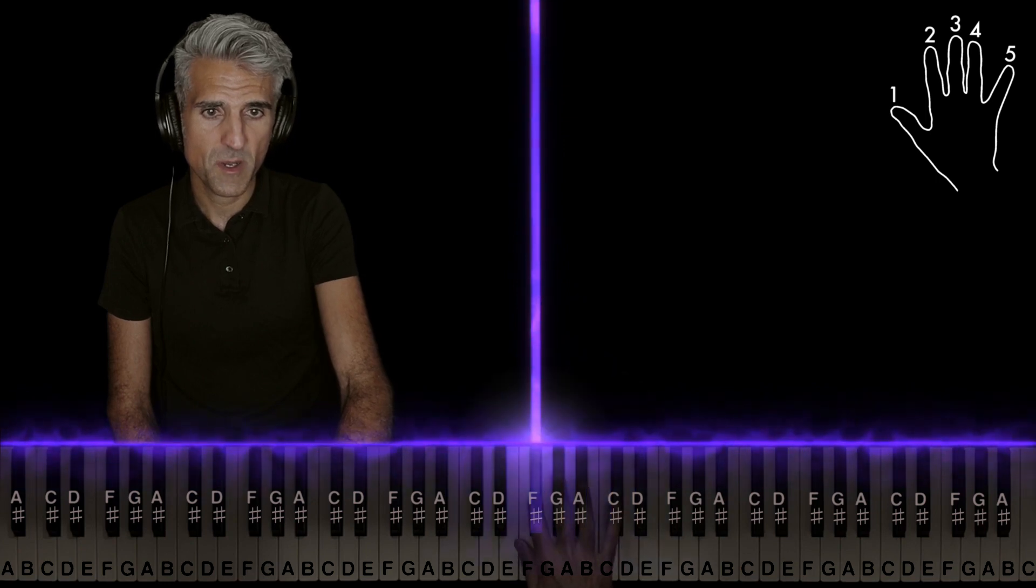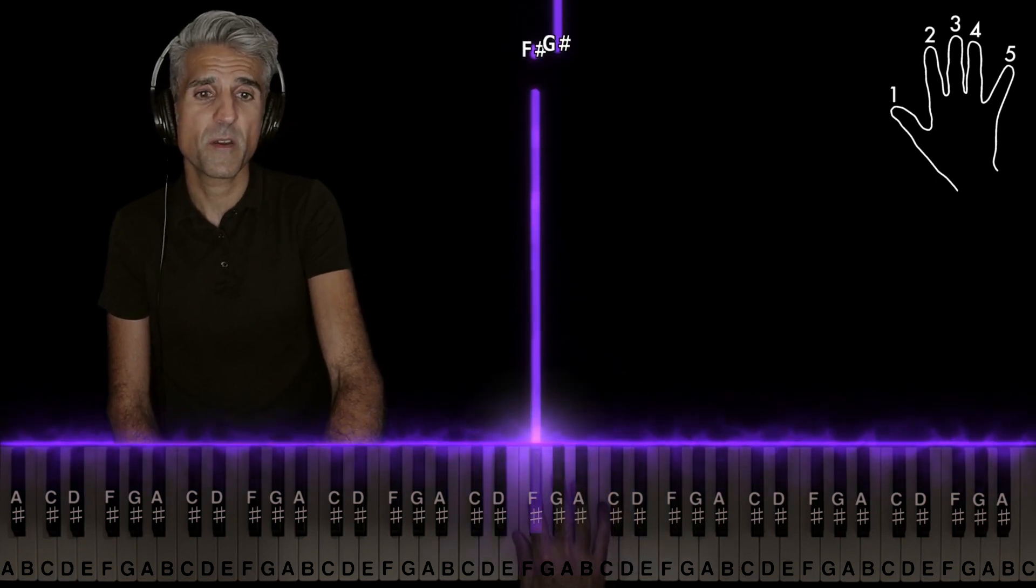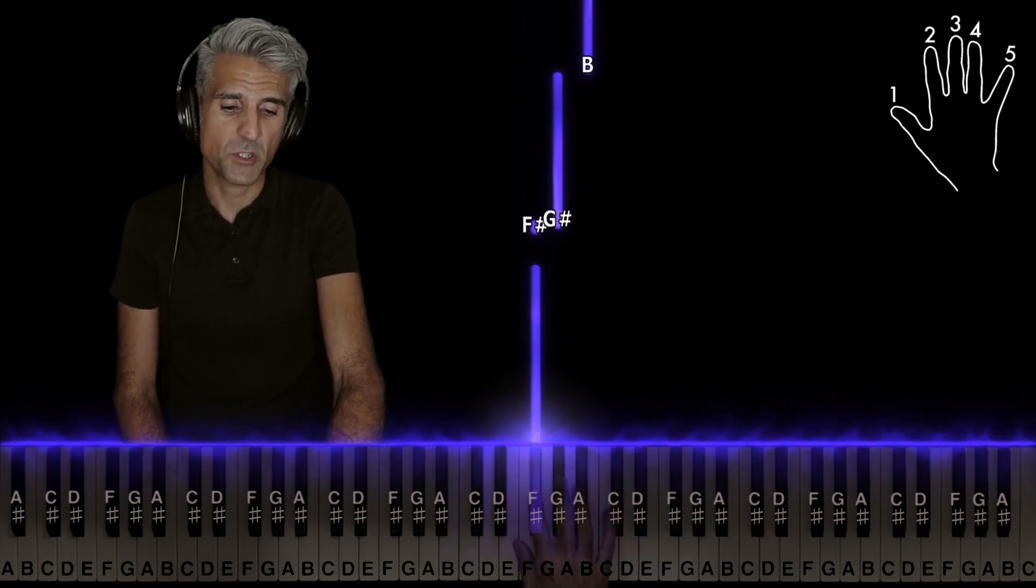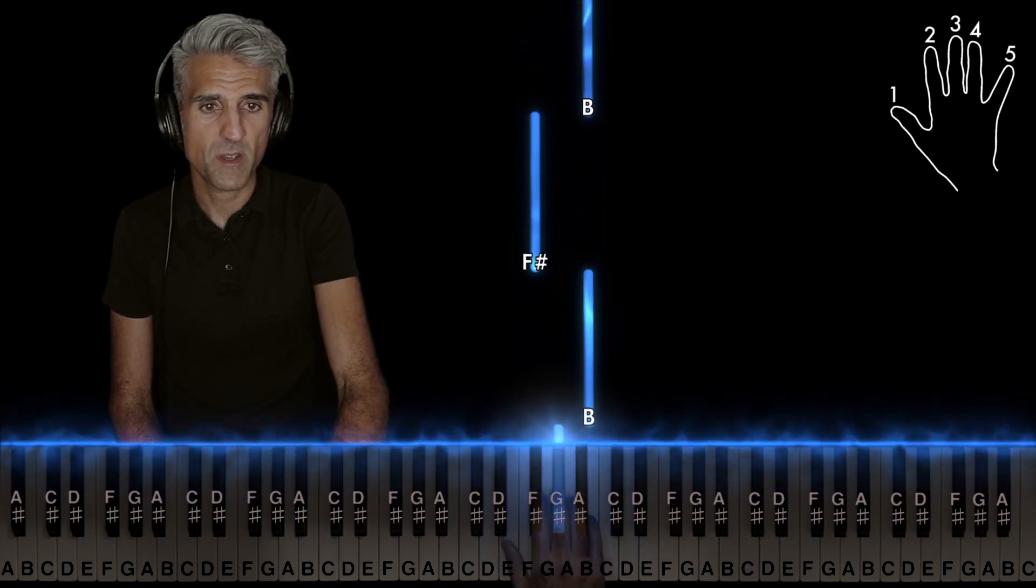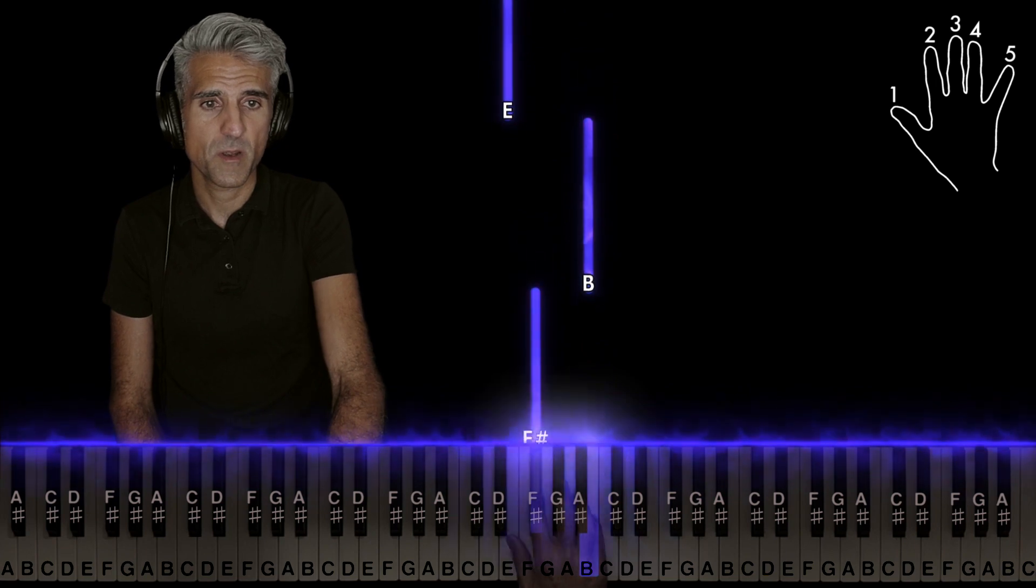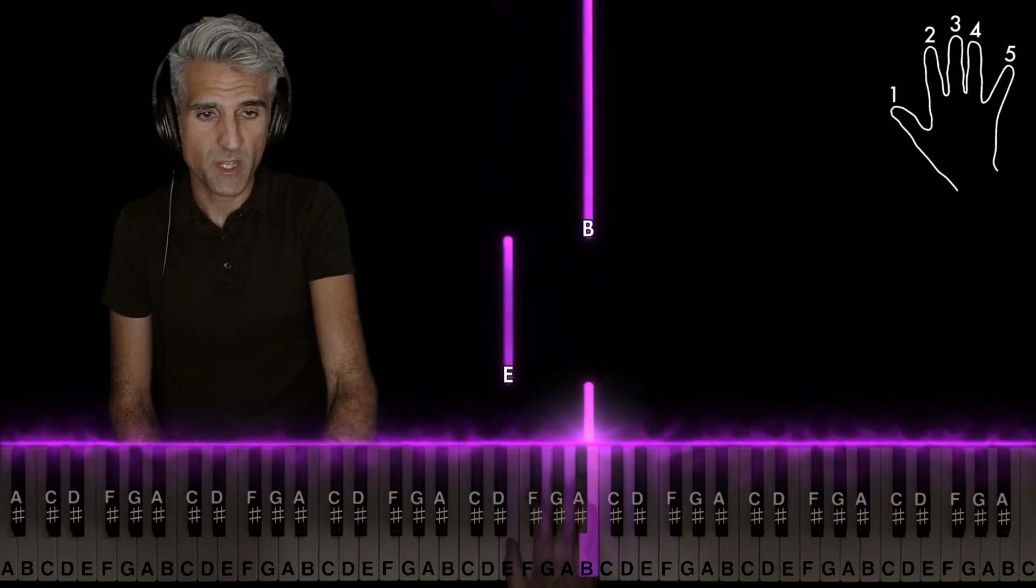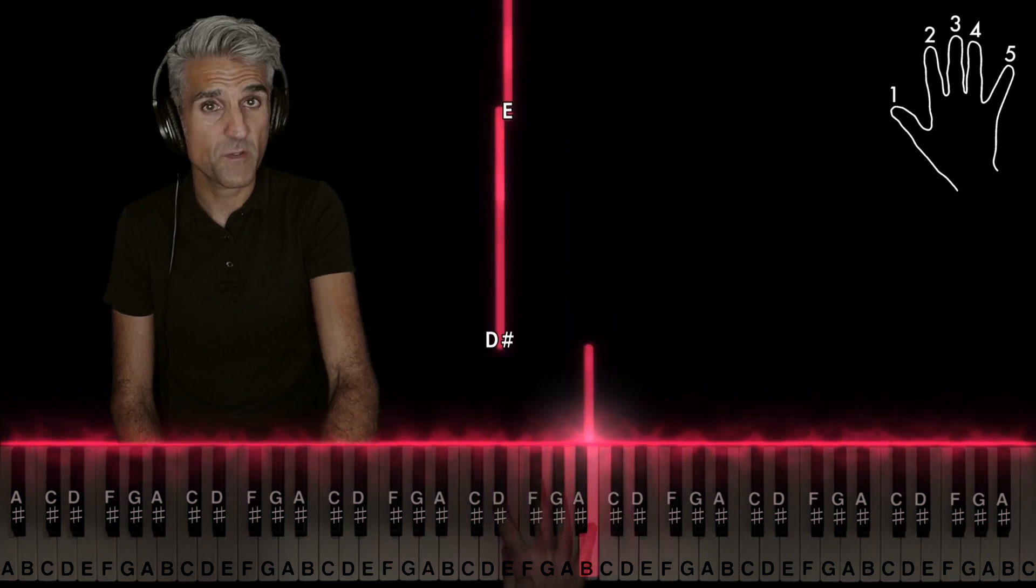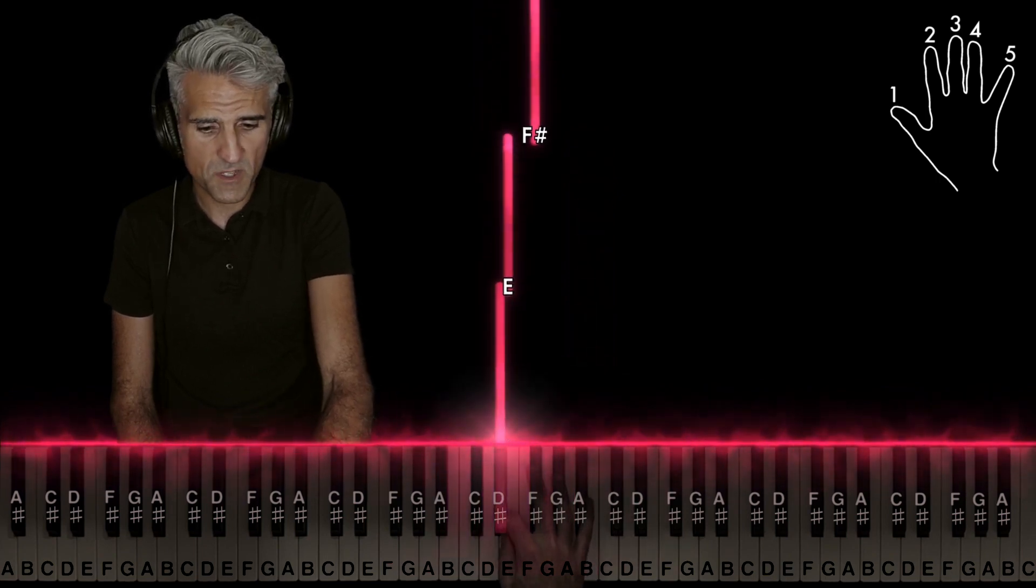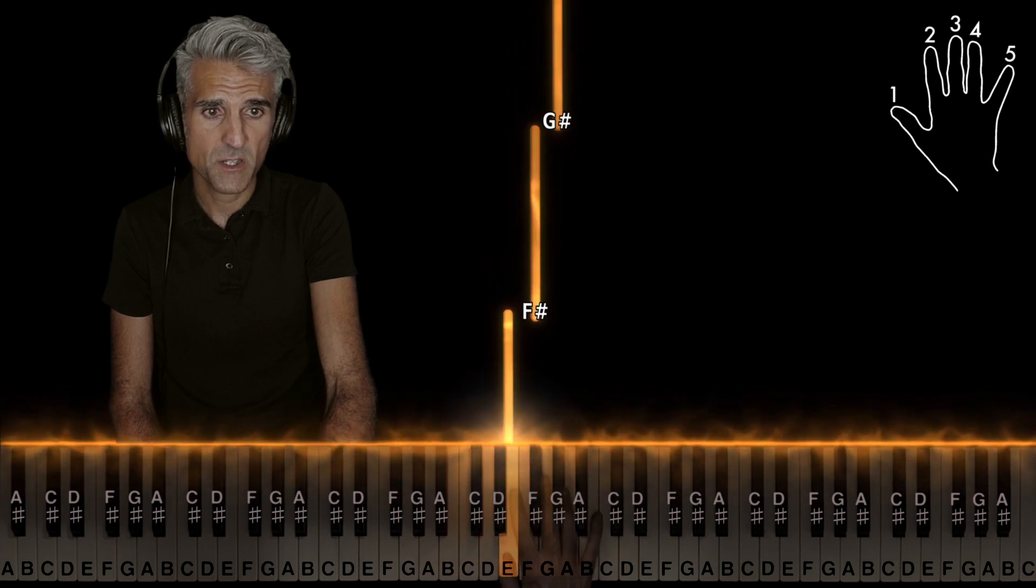Two on F sharp. And now you're going to play F sharp very rapidly back to back with G sharp using fingers two and three. Five on B, back to the F sharp, back to the B, one on E, back to the B. Then cross finger two over D sharp, cross finger one under to E, two on F sharp.